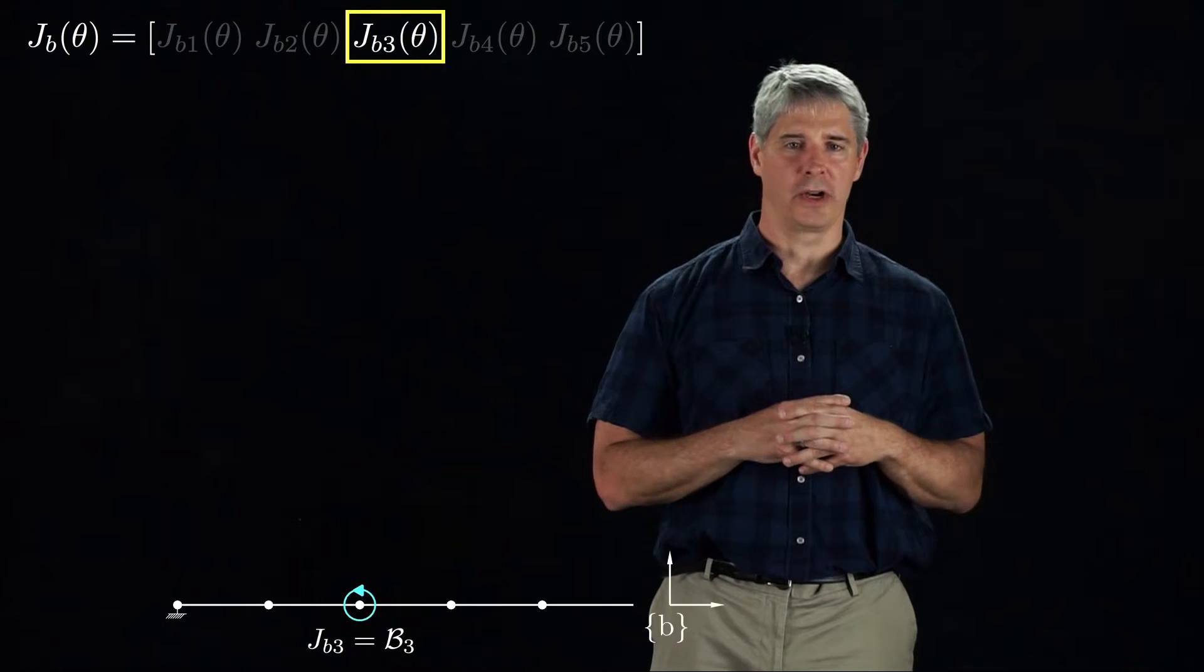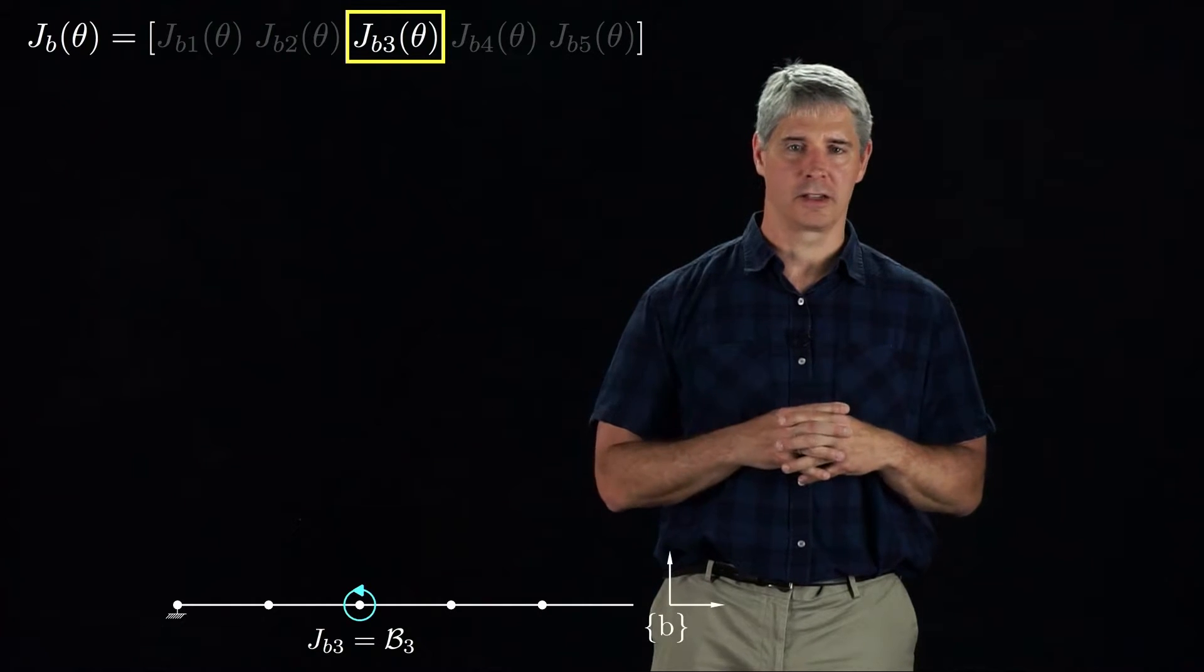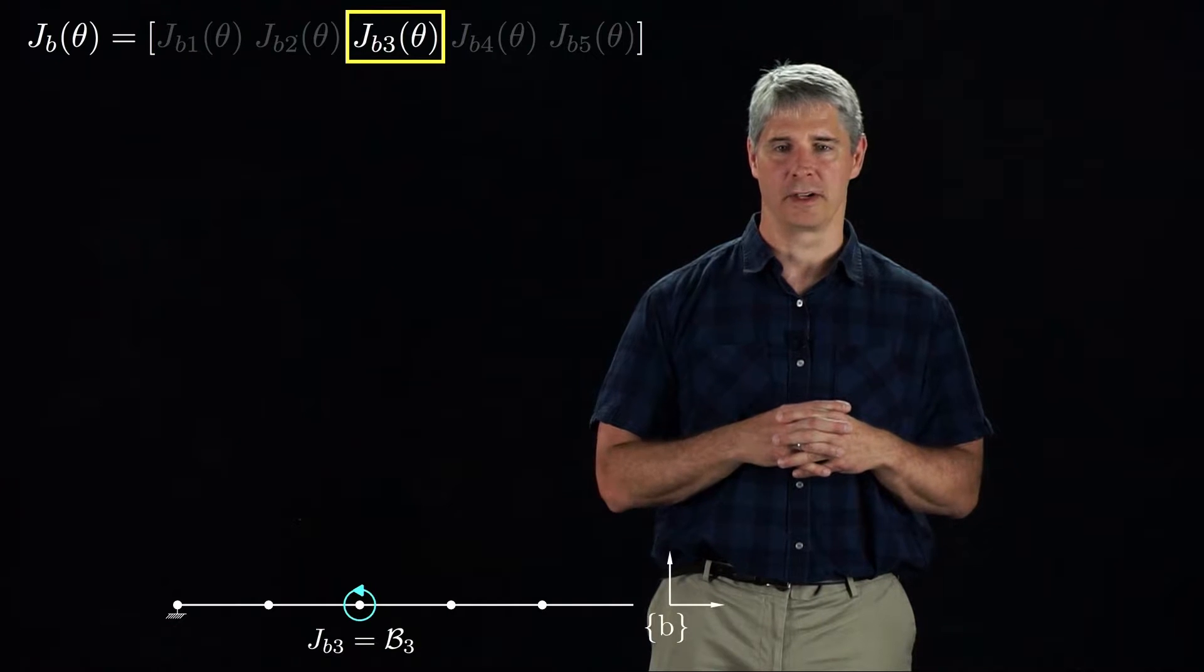First we set all joint angles equal to zero. At this configuration, Jb3 is just B3, the screw axis of joint 3 expressed in the B frame when the arm is at its zero configuration.